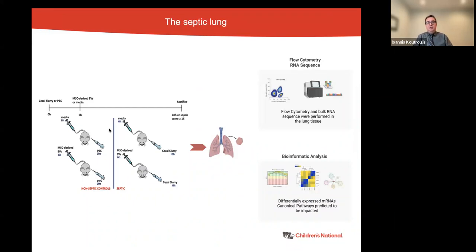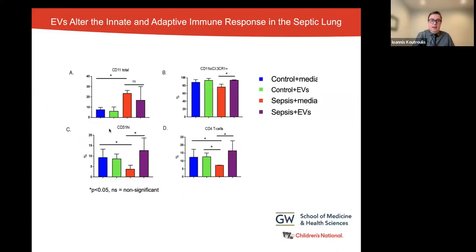Going back to the lungs, in order to study the effects of sepsis on lung immunity and metabolism, we used the same experimental model. Lung tissue was harvested and immune cells were studied using flow cytometry. We also extracted RNA from lung tissue and performed RNA sequencing, then used Ingenuity Pathway Analysis, or IPA, to examine differentially expressed mRNA. In these flow cytometry graphs, non-septic mice that received media are in blue, and non-septic mice that received EVs are in green. These blue and green bars are similar, indicating that treatment of non-septic controls with EVs hasn't really altered the immune response in the absence of sepsis.